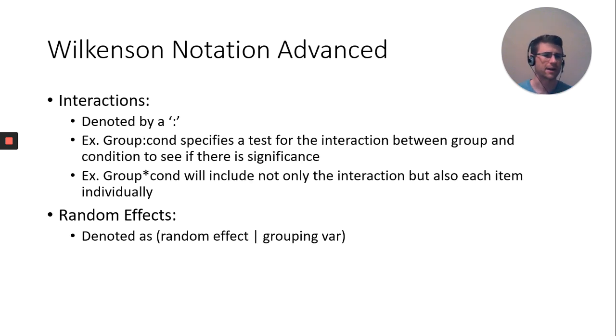You can look at interactions, which are likely very interesting, denoted by a colon. Group colon cond would specify a test for the interaction between group and condition, as opposed to the main effects alone. If you use an asterisk, it will do the interaction plus each item individually. So you would have the group and condition interaction effect, and also the main effect of group and the main effect of condition.